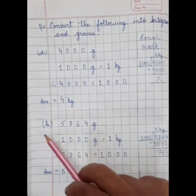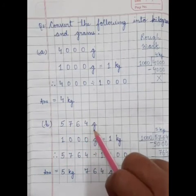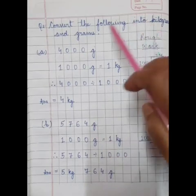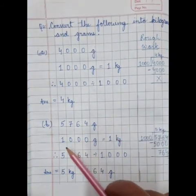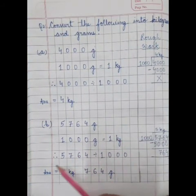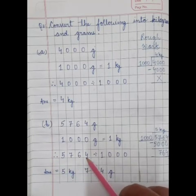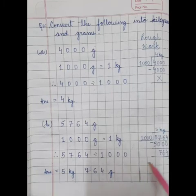Let's see another sum. B part: 5,764 gram. We have to change this gram into kg and gram. Let's follow the same steps. 1000 gram is equal to 1 kg. Therefore, 5,764 divided by 1000. We will do the rough work.